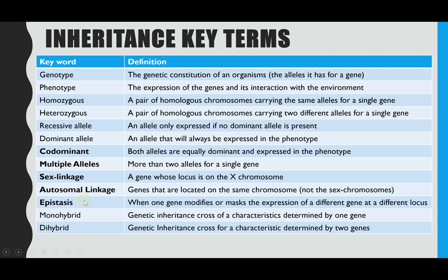There are five different types of inheritance. Codominance is when you have two alleles which are both dominant, so both will be expressed and you'll see features from both. Multiple alleles is when there are more than two alleles for a single gene. Sex linkage is a gene whose locus is found on the X chromosome, and autosomal linkage is genes located on the same chromosome but not a sex chromosome. Epistasis is when one gene modifies the expression of another. Autosomal linkage and epistasis won't be covered in this video — there are separate videos linked at the end for those.